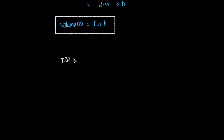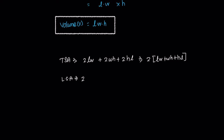To summarize: TSA, the total surface area, is 2 times of (LW plus WH plus HL), and 2 is a common factor giving 2(LW + WH + HL). The lateral surface area removes the top and bottom, and the final value is 2H times (W plus L). Next is volume, which is L times W times H.